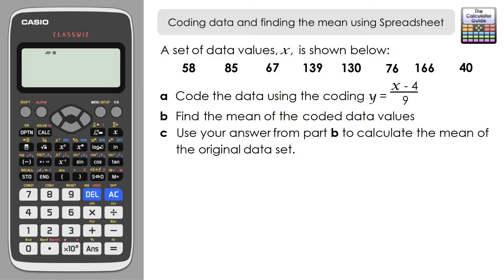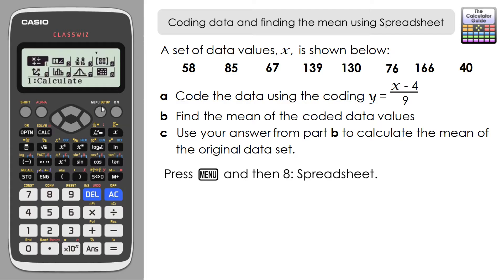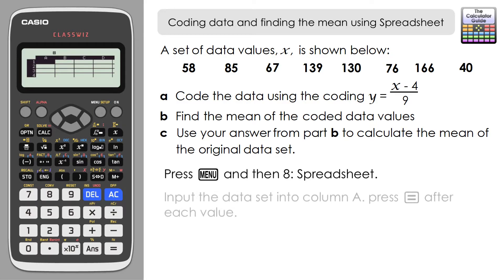Finally, we'll use the mean of that coded data set to find the mean of the original data. We're going to use spreadsheet mode to help us with this, so it's menu and then 8 for spreadsheet. The first task is to input the data values. We're going to work in columns because it's much quicker to input the data into columns.